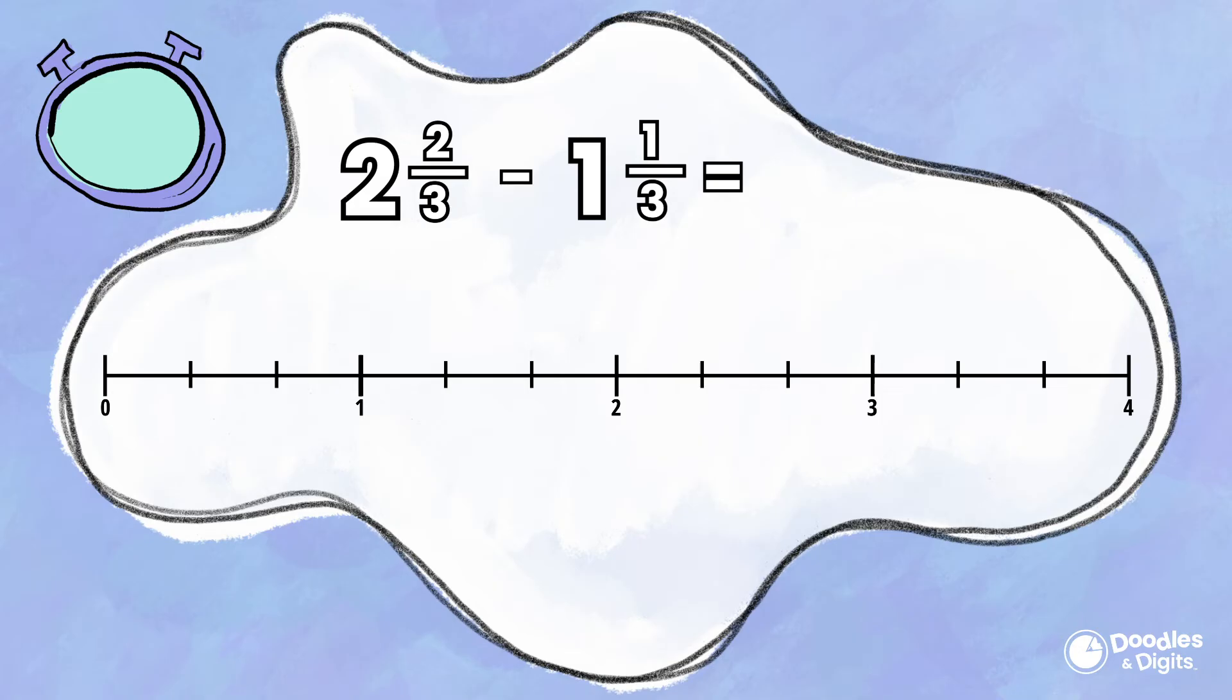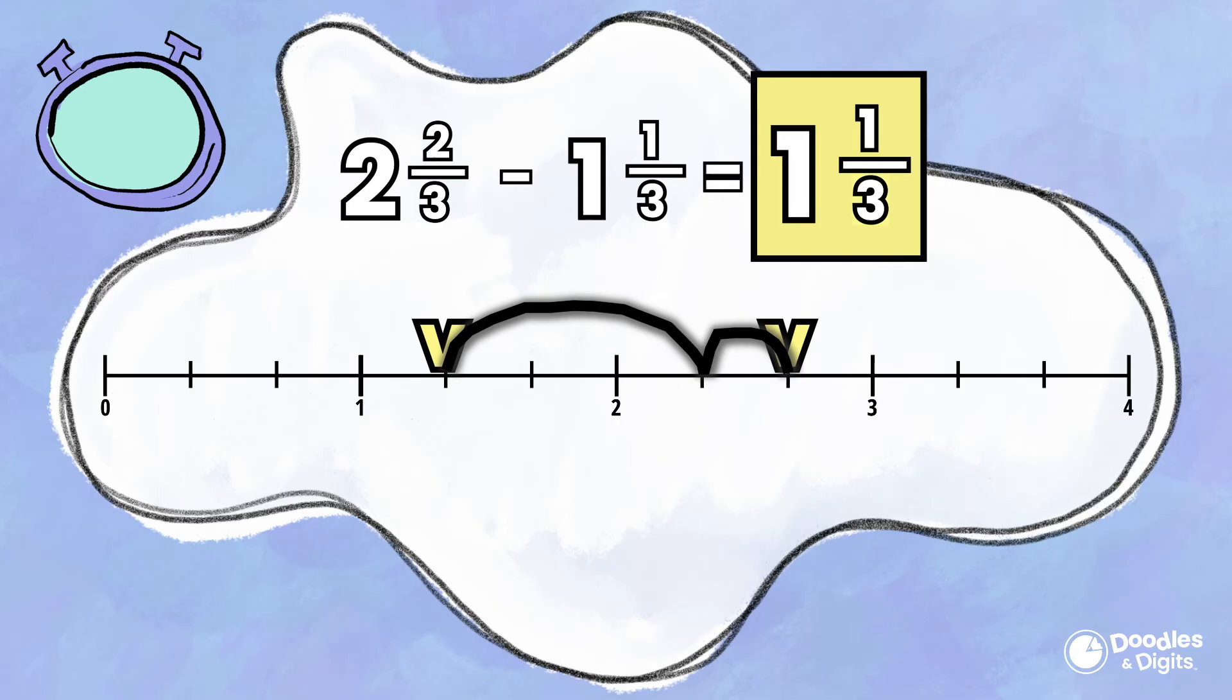I used a number line to solve this one, but you could have used a different strategy. I first put my two mixed numbers on the number line. Two and two-thirds and one and one-third. Now I'm going to figure out the difference between those two numbers. I got one and one-third.